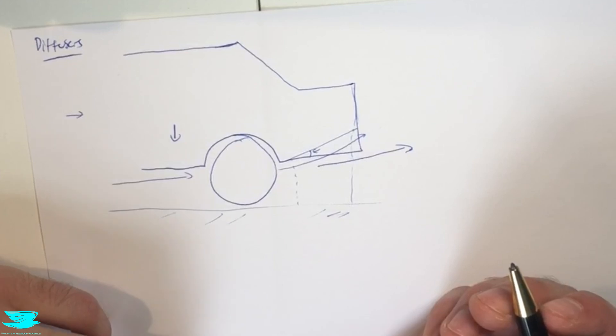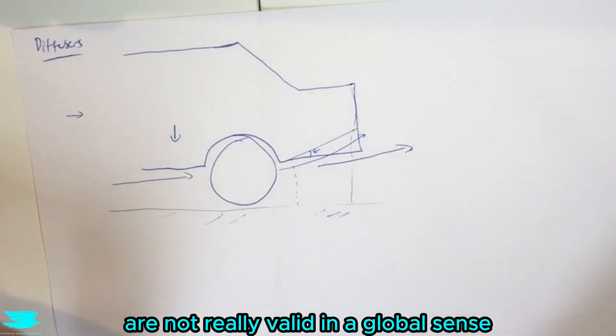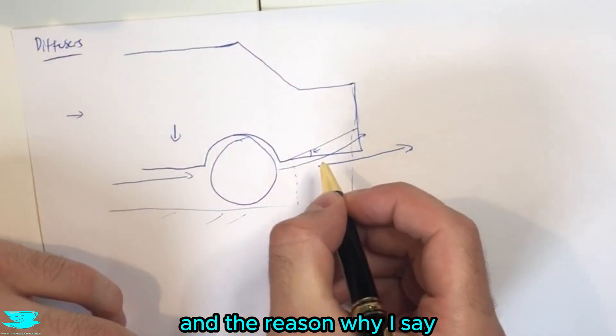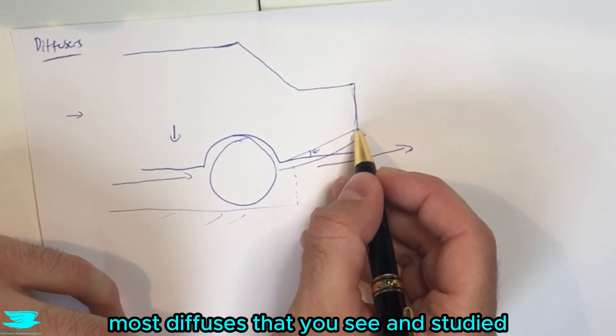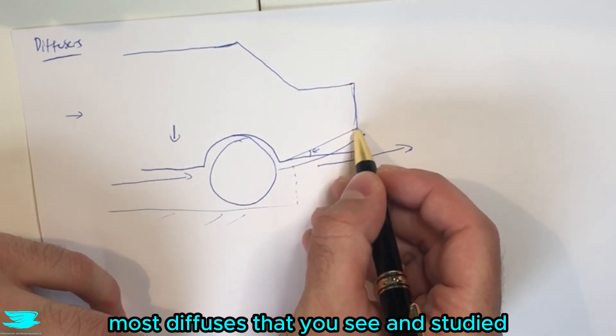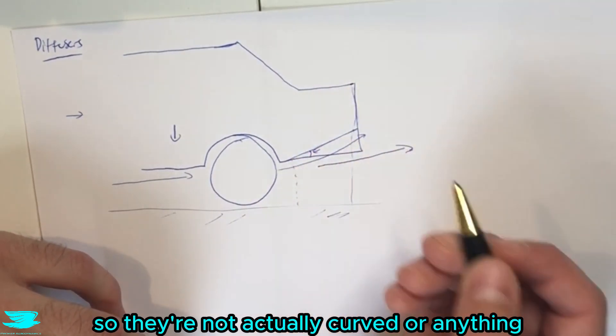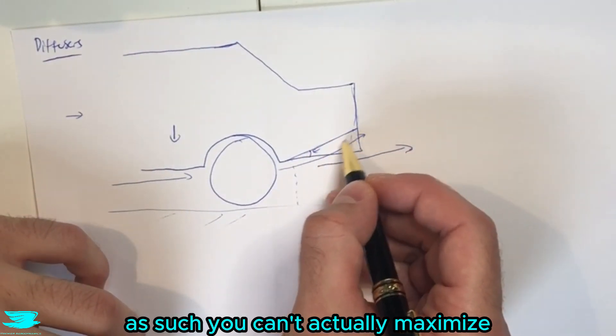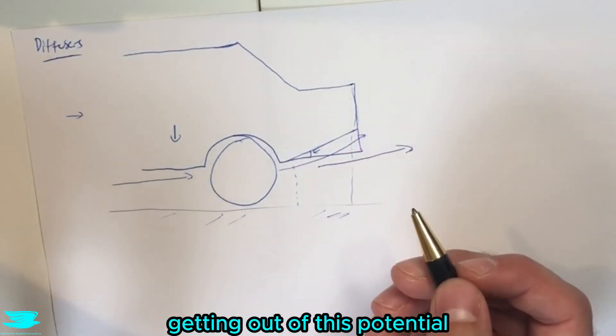So overall all these conclusions that people make are not really valid in a global sense. They are only valid for specific setups, and the reason why I say that is because first of all most of the diffusers that you see and are studied are straight here. So they're not actually curved or anything. So it's a very simple shape. As such you can't actually maximize the benefits that you're getting out of this potential idea.